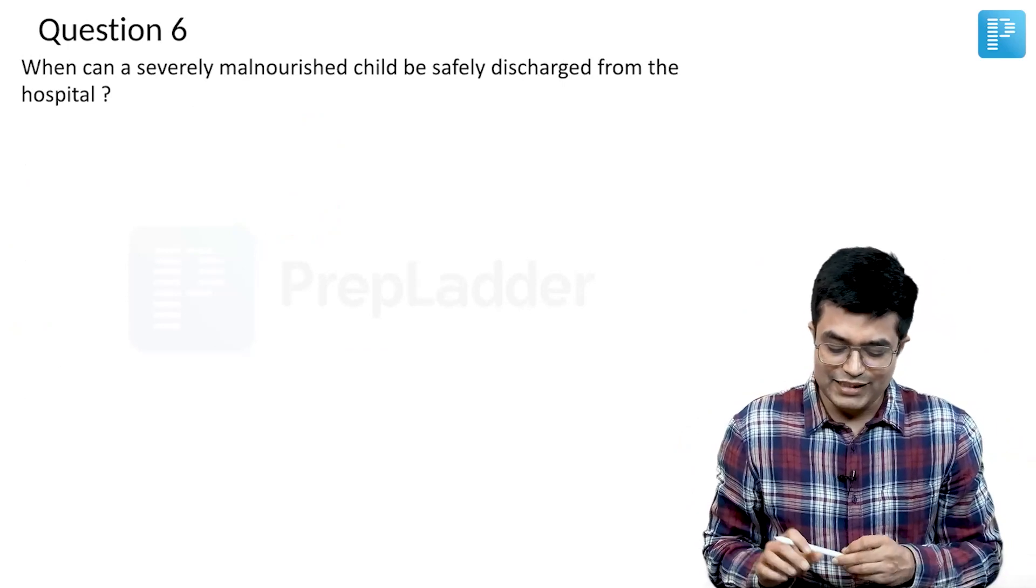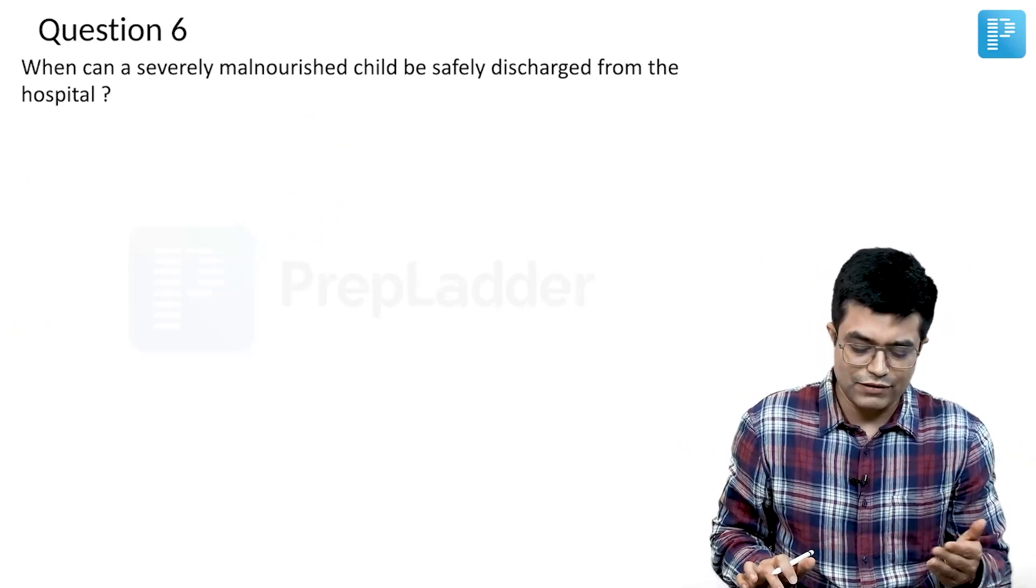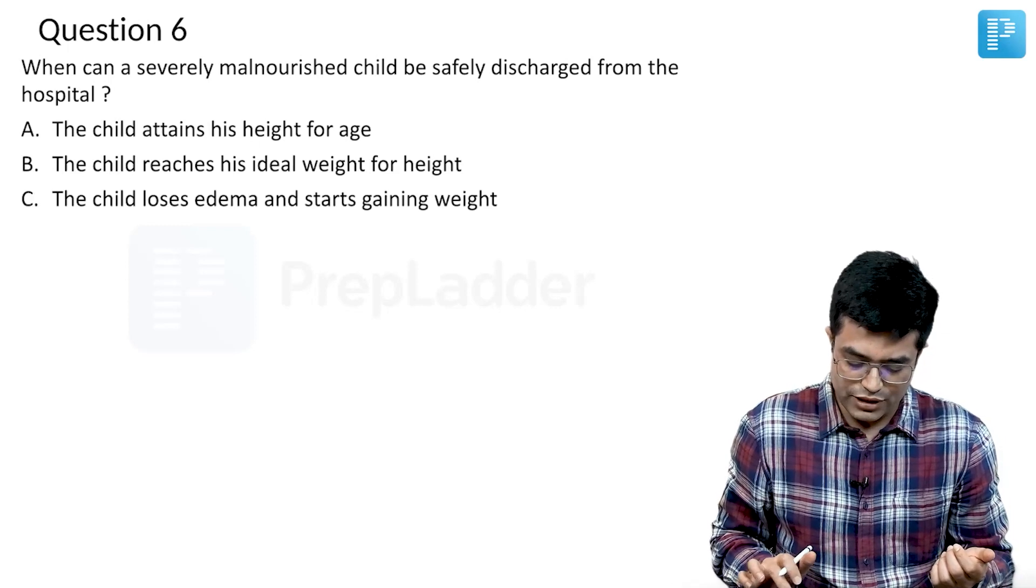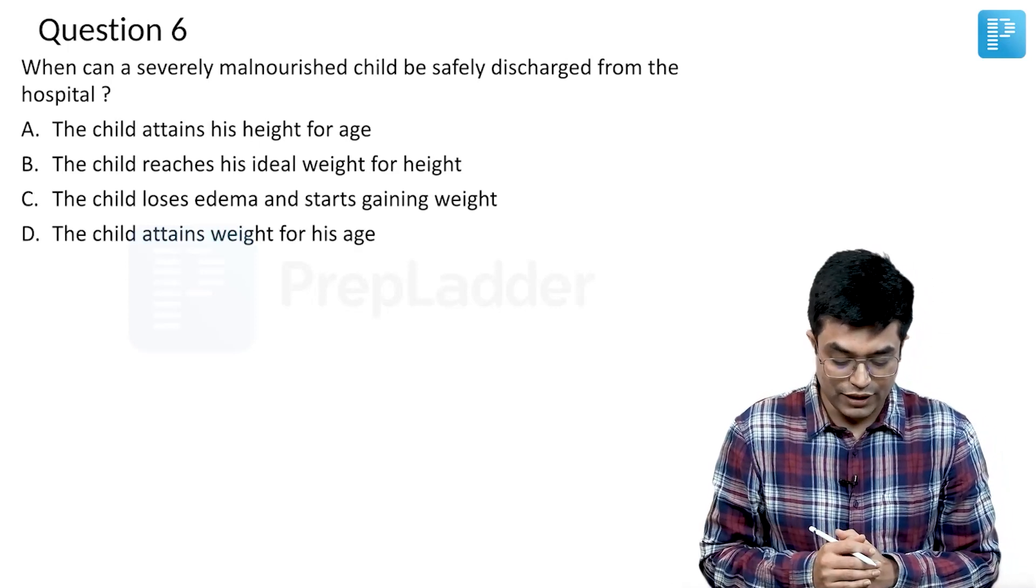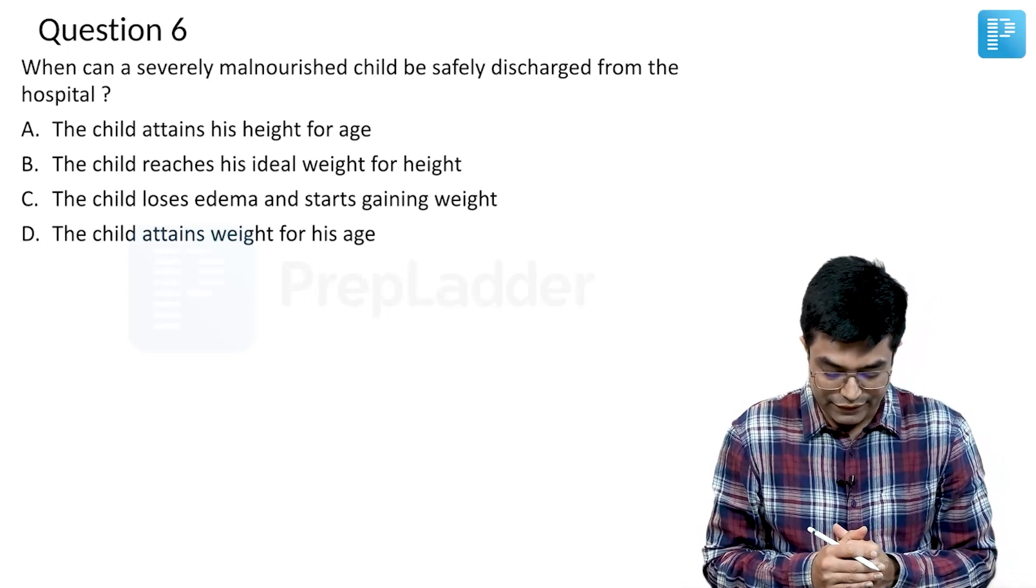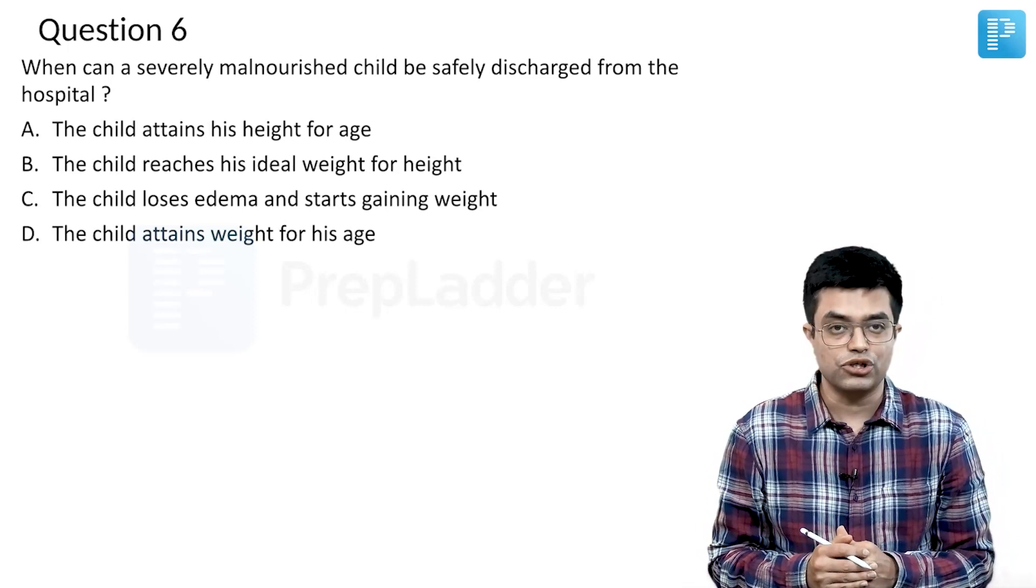When can a severely malnourished child be safely discharged from the hospital? There are specific criteria for that. Four options are given: child attains his height for age, child reaches his ideal weight for height, child loses edema and starts gaining weight, and child attains weight for his age.